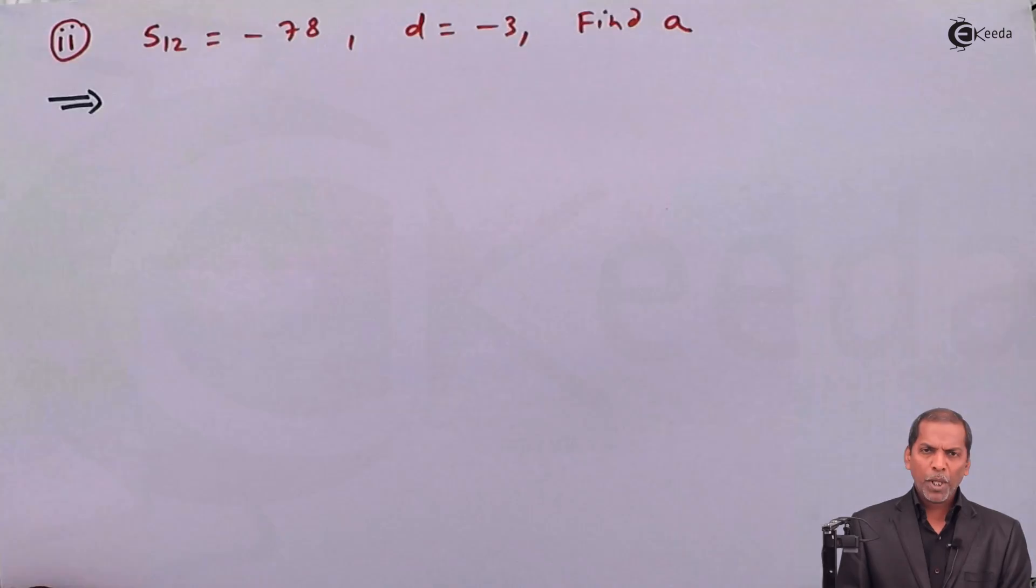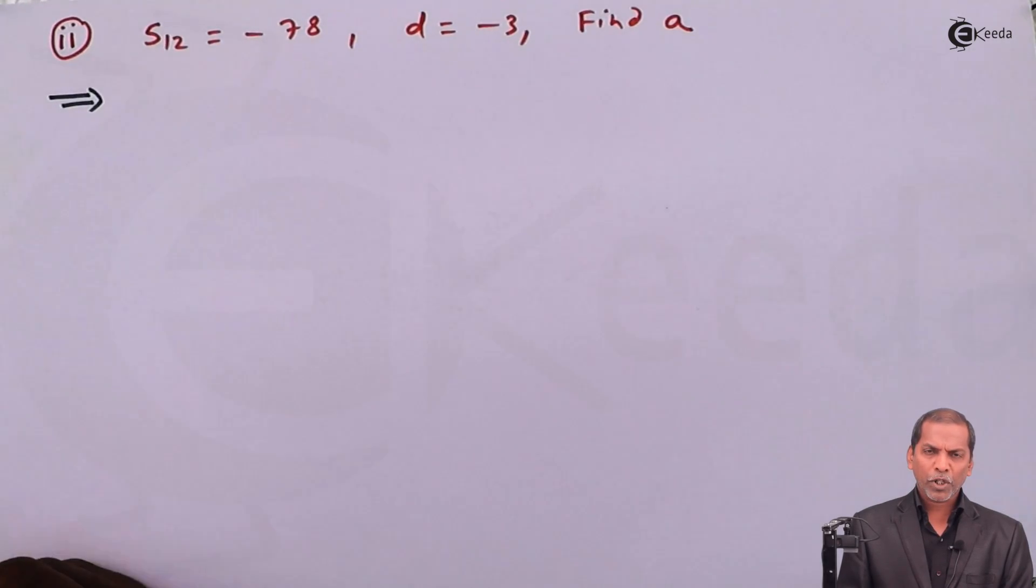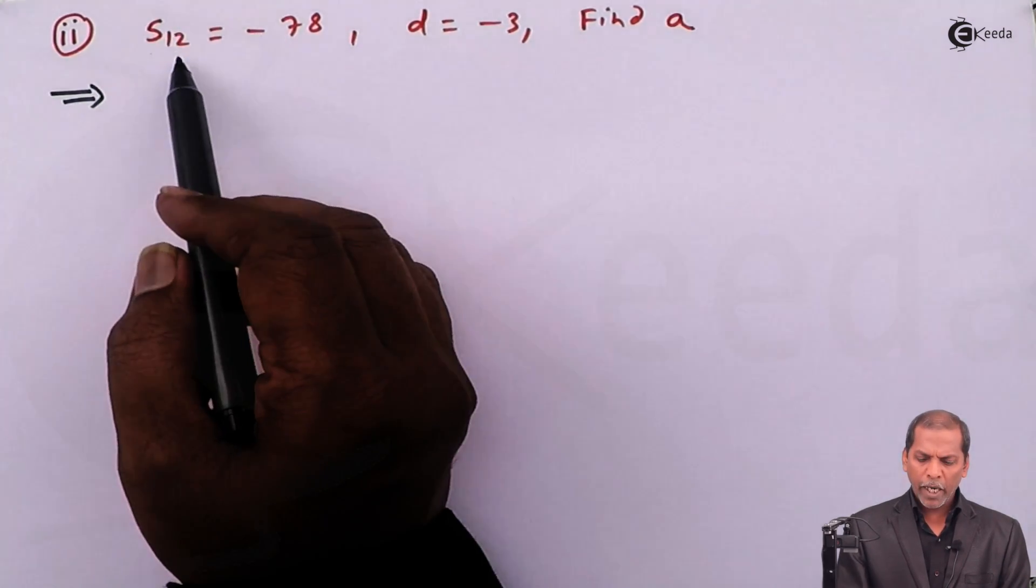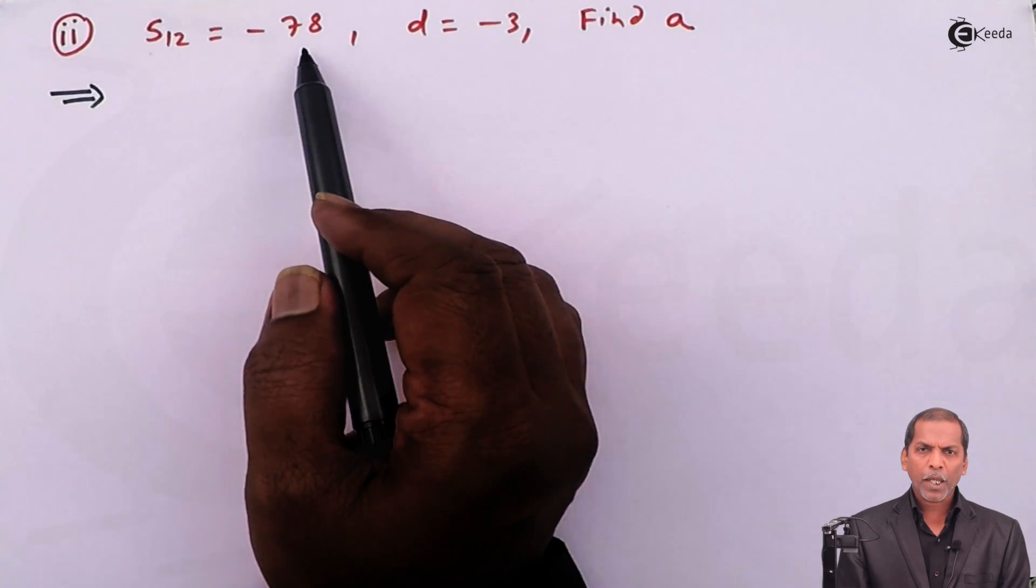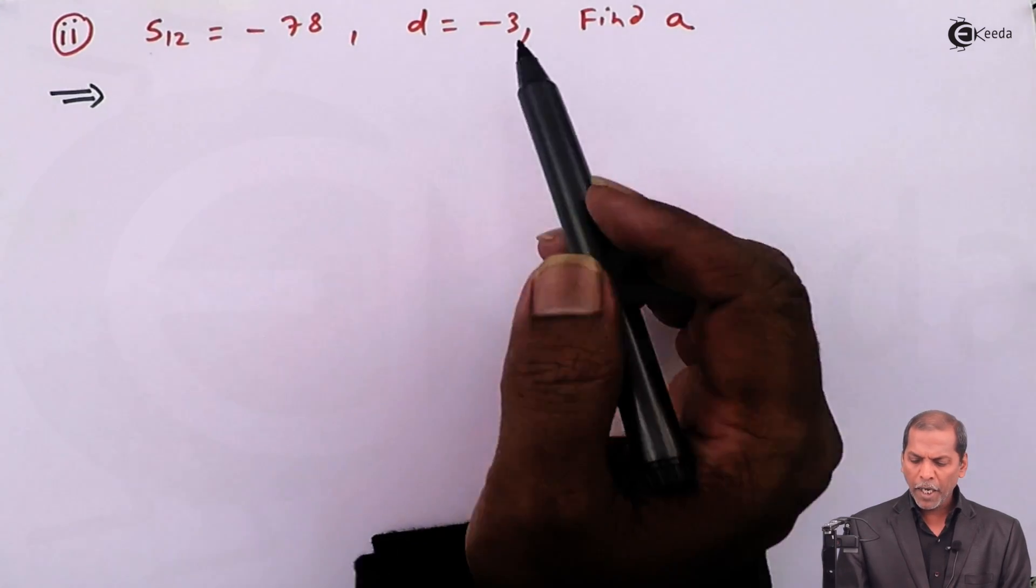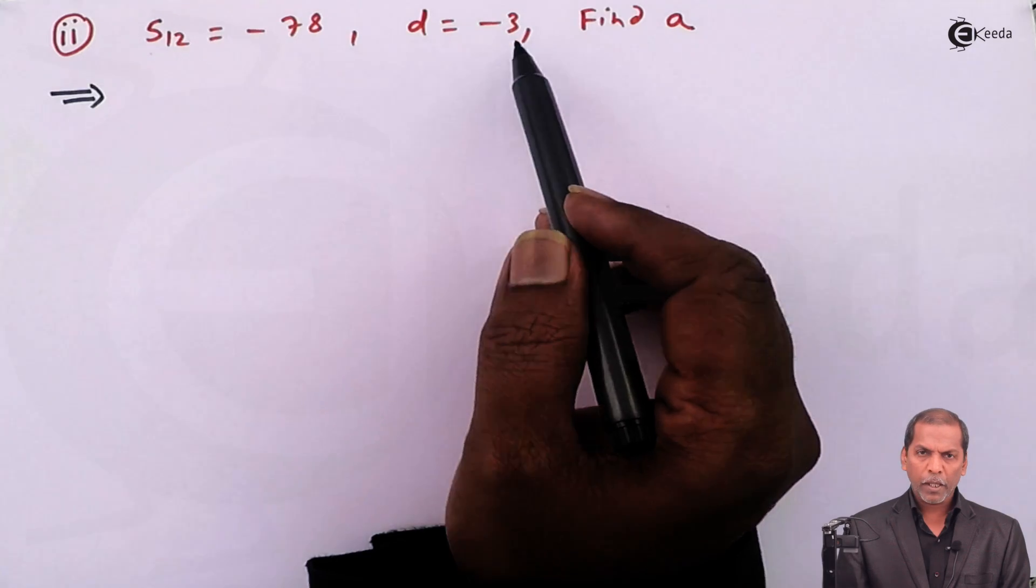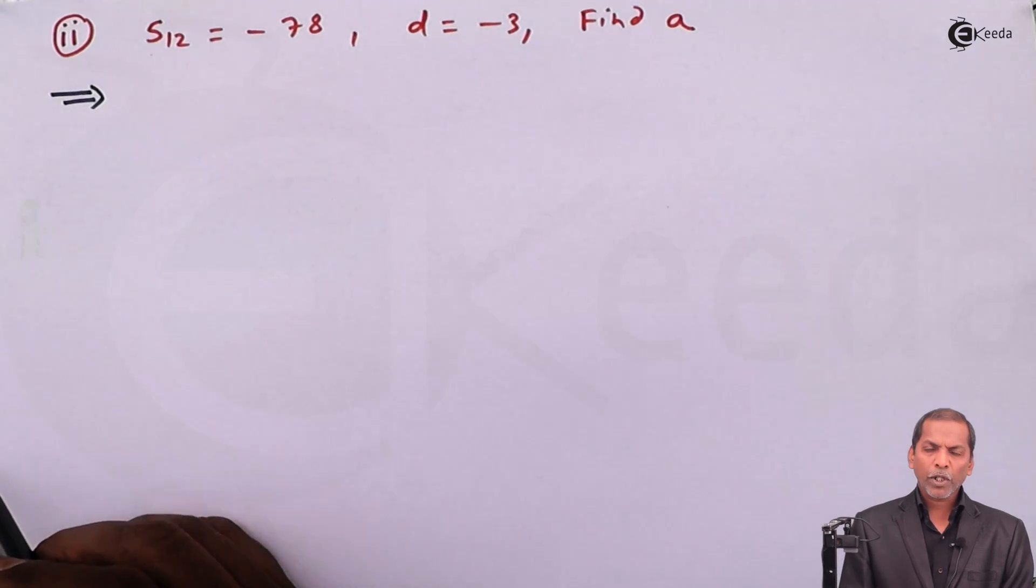Hello friends, now we see sub question 2 of question number 8. In this sub question we have given that S₁₂ equals minus 78 and d equals minus 3. The question is we have to find the value of a.